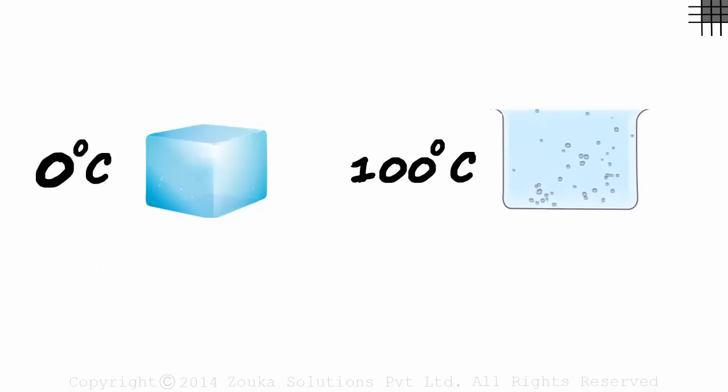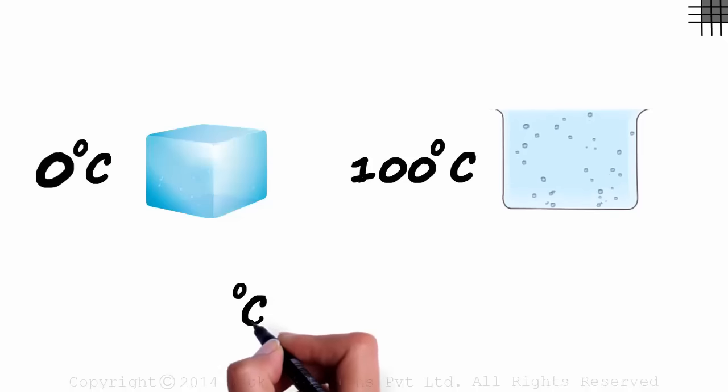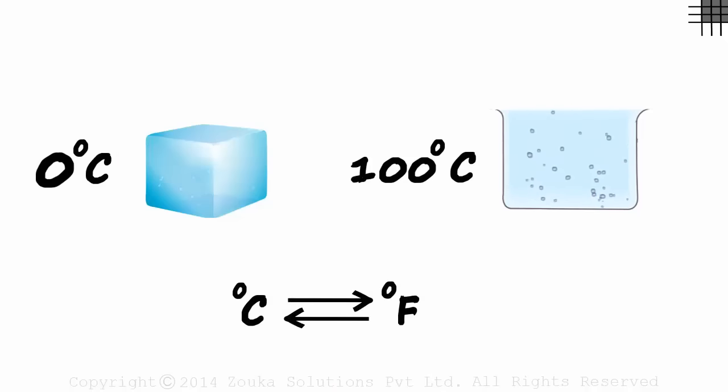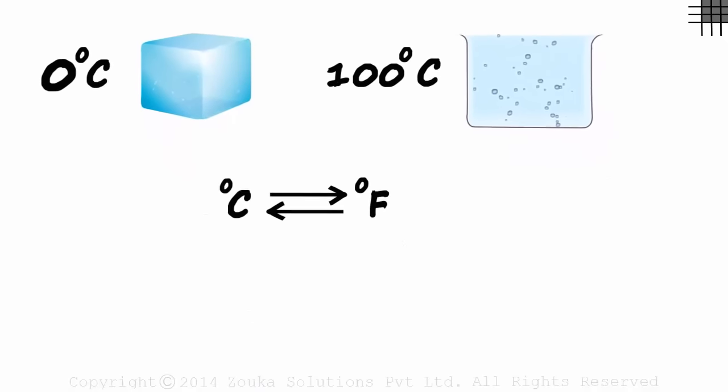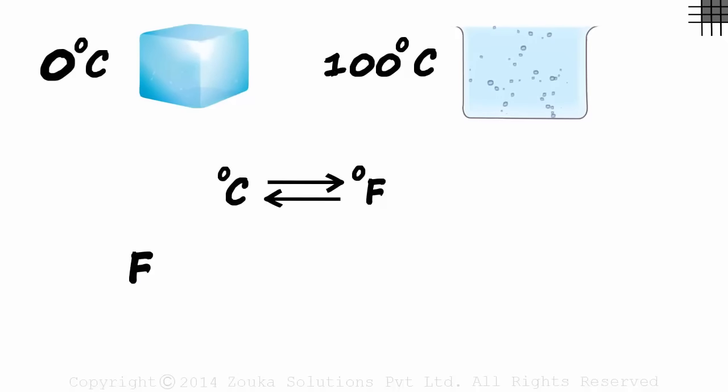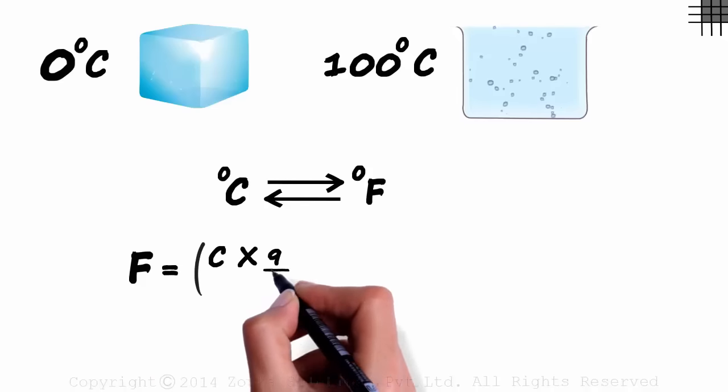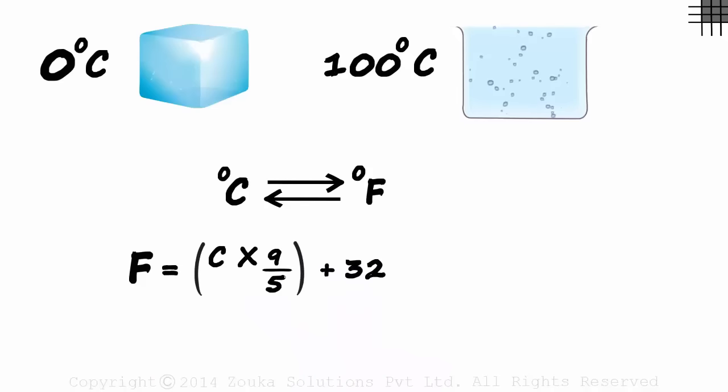There is a particular way in which we can convert Celsius to Fahrenheit and vice versa. This is the formula to convert Celsius to Fahrenheit. We multiply the temperature in Celsius with 9 over 5 and add 32 to it.